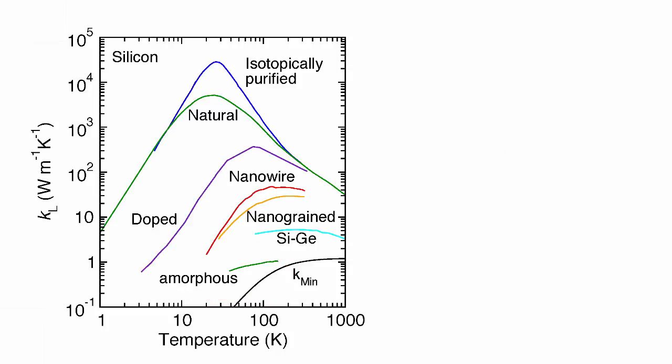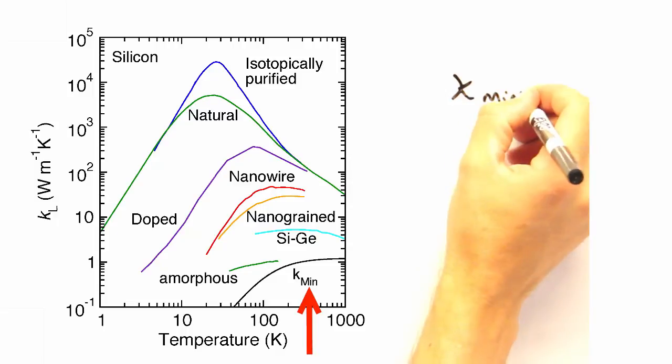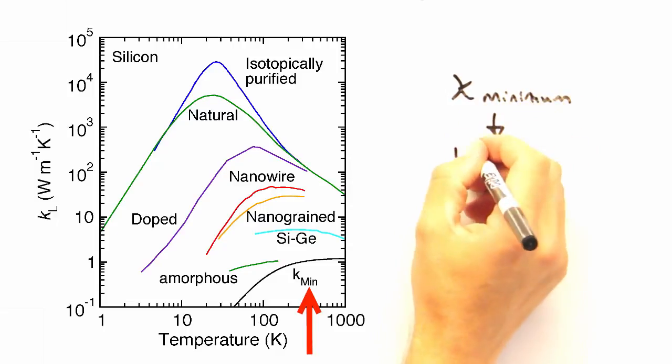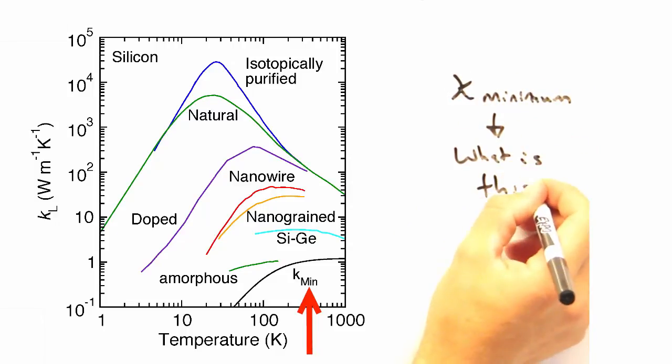Whew. All right. I think that about does it for this graph, and wraps up thermal conductivity and phonons really nicely, with the exception of one question to ponder at home. At the bottom of this graph, there's a region where kappa has what we would call a minimum value. If you were going to develop an expression for minimum thermal conductivity, what would you put in it?